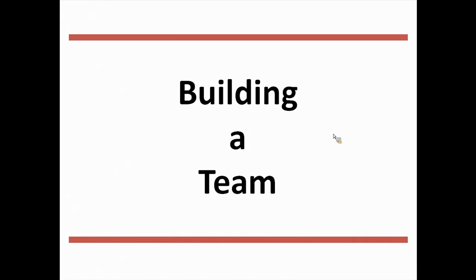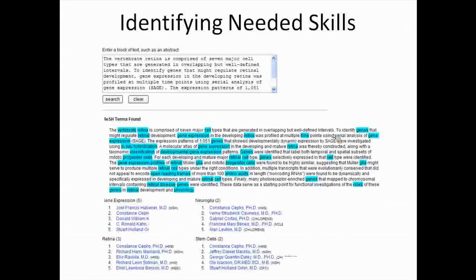Then there's also the social science part — you can't just put four people together and hope they'll become successful. There are different motivations why people want to come together and collaborate. Sometimes it works, sometimes it doesn't. So there's both a computational challenge and a social challenge of trying to figure out a group of people with complementary skills who are likely to come together and work well together.